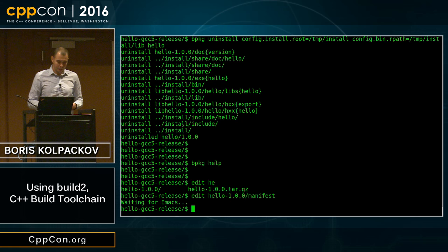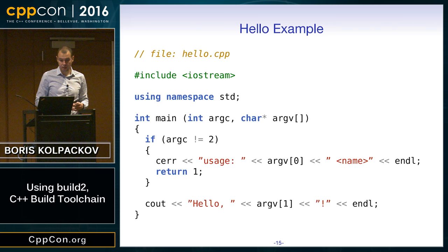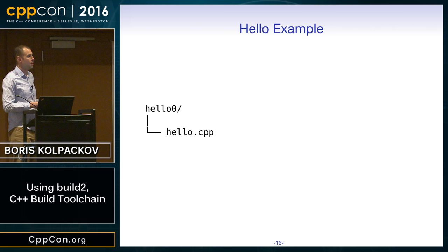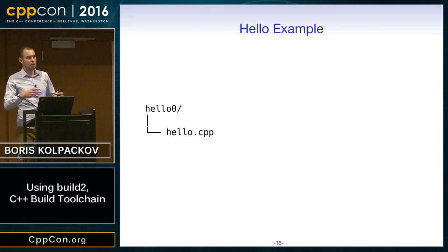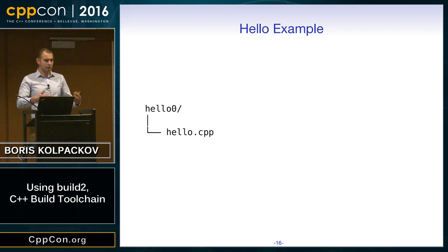Now let's change hats and wear the hat of someone who is going to create a package using Build2 as a build system. We're going to write a little hello example. During everyday development you don't want to use the package manager directly — you don't want the unpack, download, fetch, configure cycles all the time. You might have a local repository and a number of configurations for testing — different compilers, different versions of packages. But for everyday edit-build-test cycles, you want to use the build system directly. It's just more efficient.